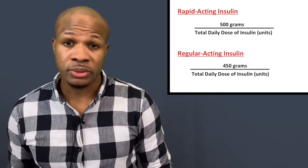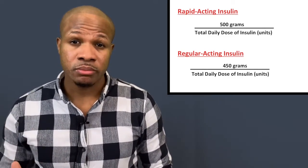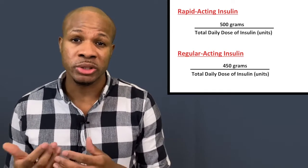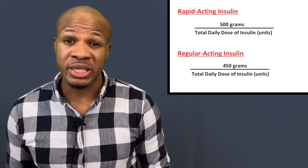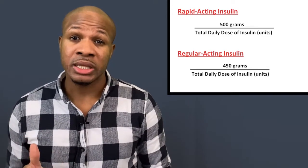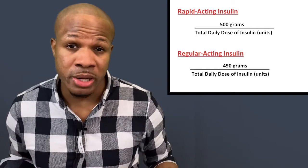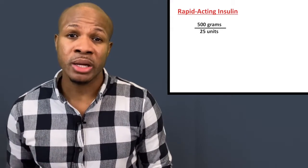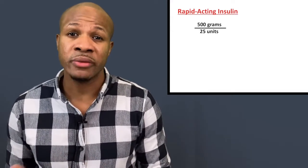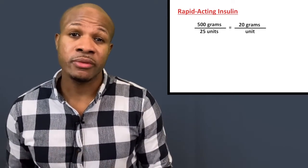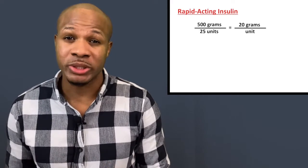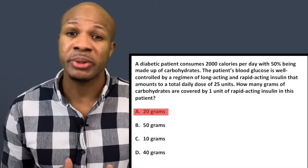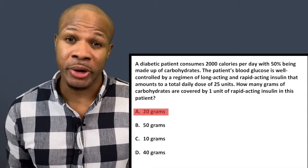There are two different formulas — one for regular insulin and one for rapid-acting insulin. In this case, the patient takes rapid-acting insulin, so we're going to use that formula. That formula is 500 divided by the total daily dose of insulin. So we have 500 divided by 25 units, which equals 20. Therefore, one unit of rapid-acting insulin covers 20 grams of carbohydrate for this patient. The answer is answer choice A — 20 grams.